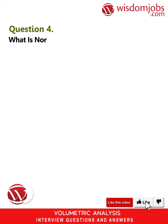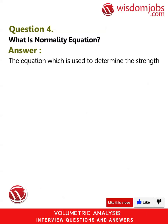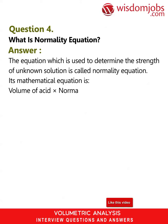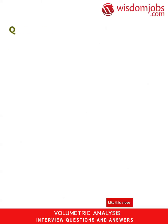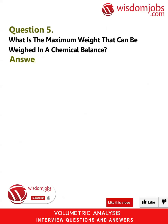Question 4: What is the normality equation? Answer: The equation which is used to determine the strength of an unknown solution is called the normality equation. Its mathematical form is: Volume of acid × Normality of acid = Volume of base × Normality of base. Question 5: What is the maximum weight that can be weighed on a chemical balance? Answer: 100 grams.